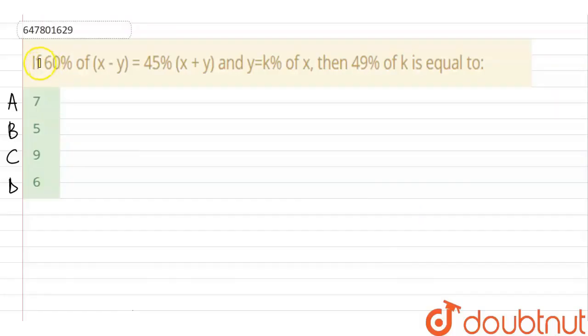Hello everyone, the given question here is: if 60% of x minus y is equals to 45% of x plus y, and y is equals to k percent of x, then what is 49% of k? The options are option A: 7, option B: 5, option C: 9, and option D: 6.